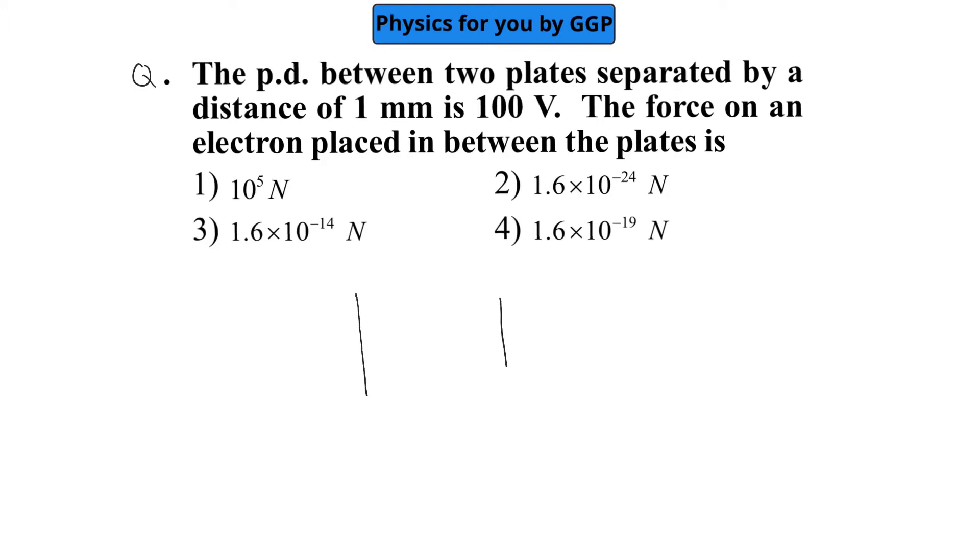Assume we have two plates. The potential difference between them is 100 V and they are separated by a distance equal to 1 mm.